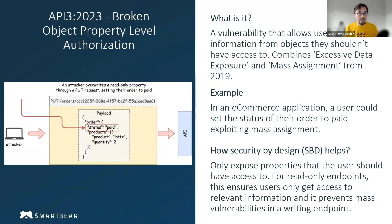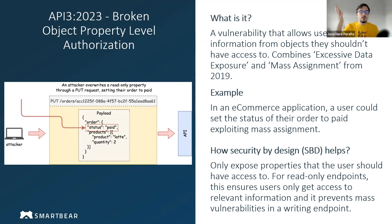Those two vulnerabilities are mass assignment and excessive data exposure. Excessive data exposure is when you are leaking more information than you should to the users of your application. For example, in a medical application, you may be leaking patient records or details about patients that certain users shouldn't be able to see. Mass assignment is the ability of a user to overwrite what we call server-side or read-only properties.